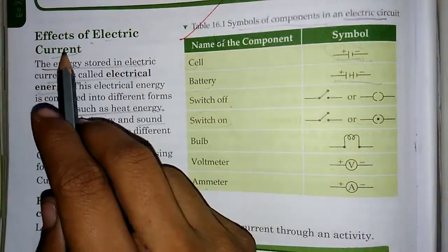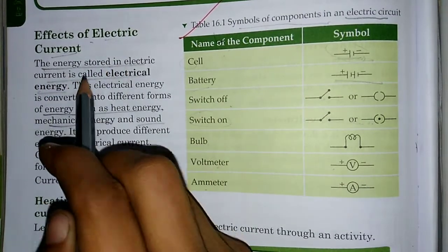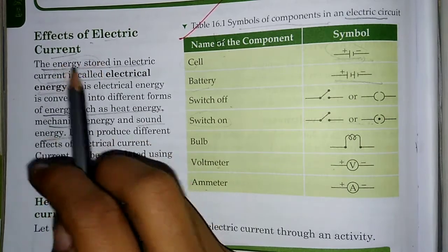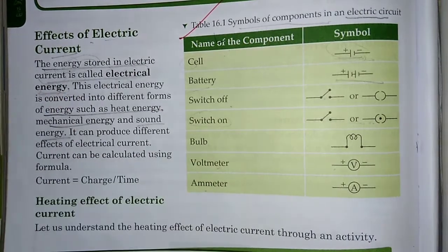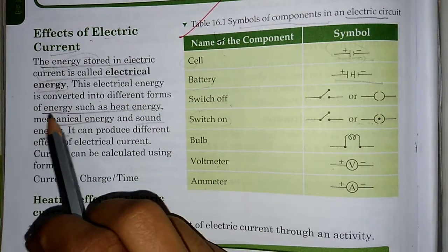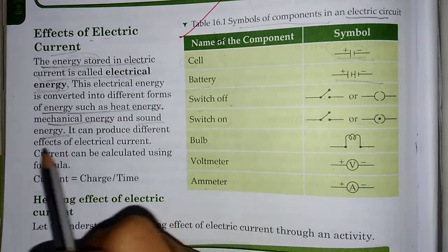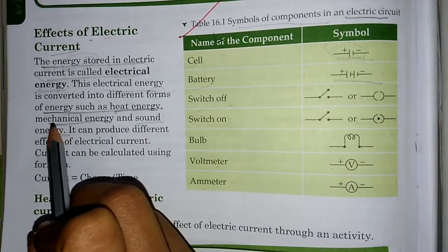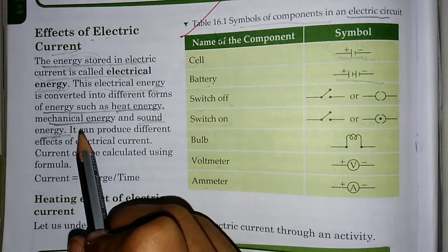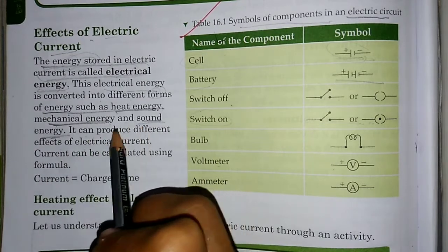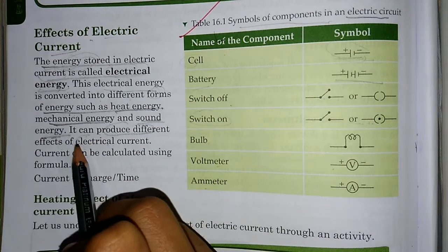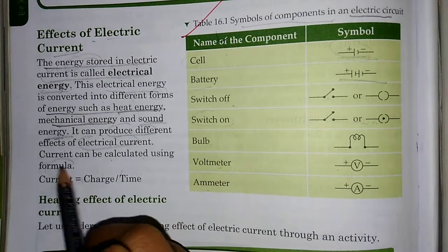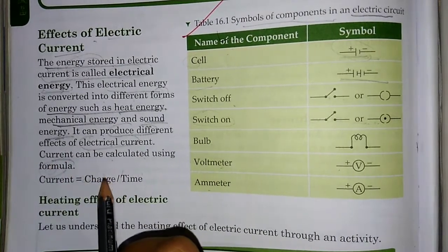The energy stored in electric current is called electrical energy. This electrical energy is converted into different forms of energy such as heat energy, mechanical energy and sound energy. It can produce different effects of electric current. Current can be calculated using the formula: Current equals charge divided by time.